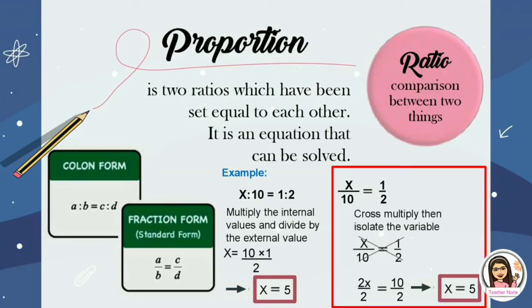Let's now solve the next equation: x over 10 equals 1 over 2. We are going to cross multiply and then isolate the variable. x multiplied by 2 is 2x, and 10 multiplied by 1 is 10. Then 2x divided by 2 is 1, and 10 divided by 2 is 5. So the missing number is 5; the answer is x equals 5.